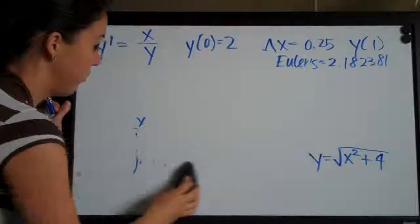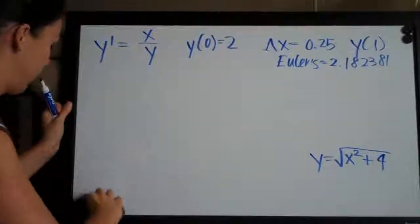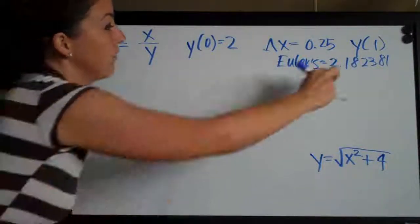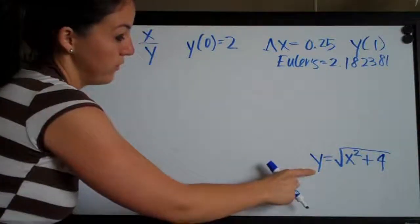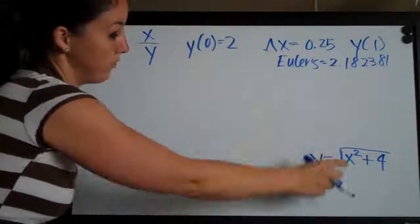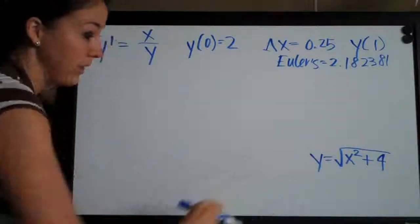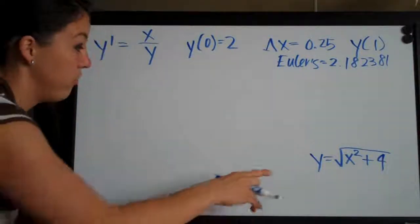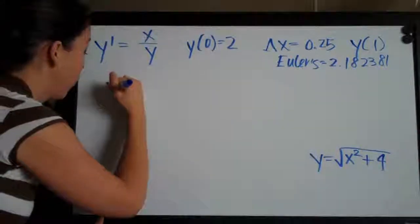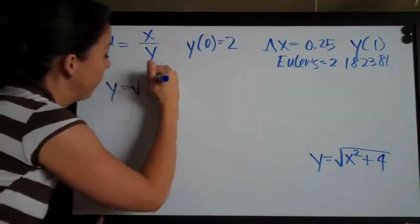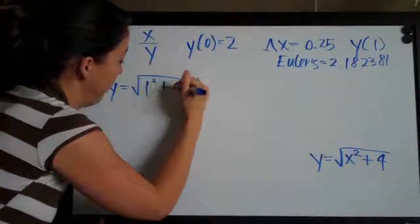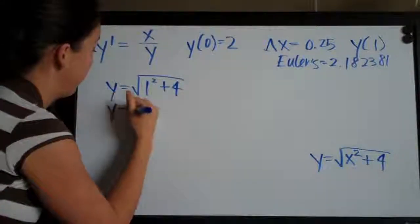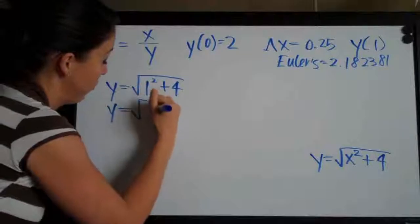But now we need to, just as with Euler's method in the previous video, we approximated y(1). Now we want to, since we solved the equation, plug in one for x and get the actual answer. So we'll get y equals the square root of one squared plus four. So of course that means we have y equals the square root of five.